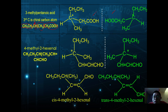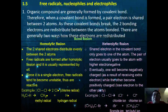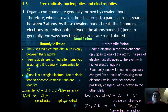That concludes stereoisomerism. Next, we cover free radicals, nucleophiles, and electrophiles. Organic molecules are generally formed by covalent bonds, where a pair of electrons is shared between two atoms. When a covalent bond is broken, the two electrons are redistributed — there are two ways this can happen.